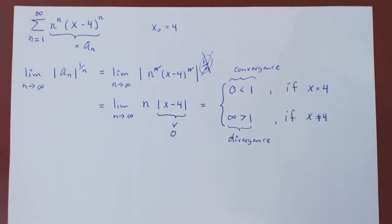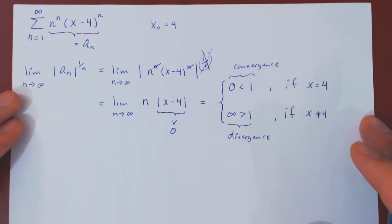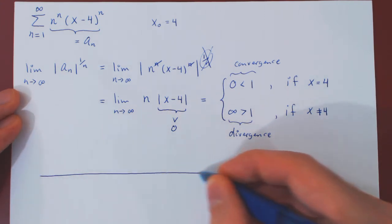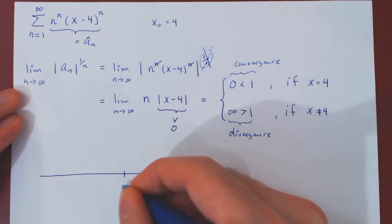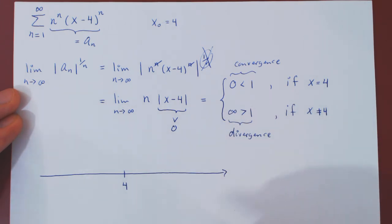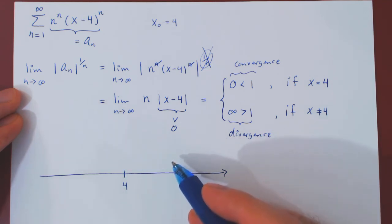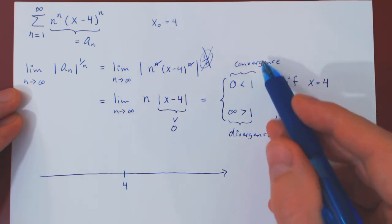Now what about the radius and interval of convergence? Well, if you visualize this again onto the real line, the center is 4, and the radius of convergence is, if you remember, how far away can you walk from the center of the series and still have convergence?